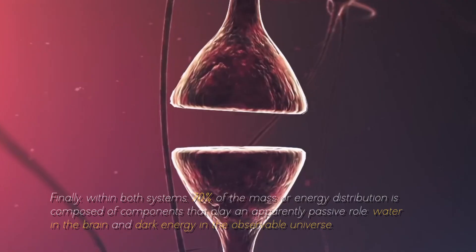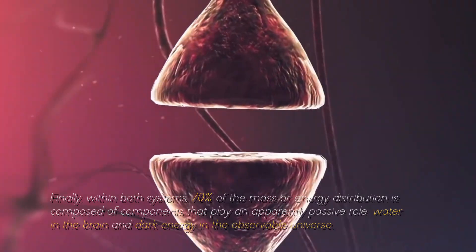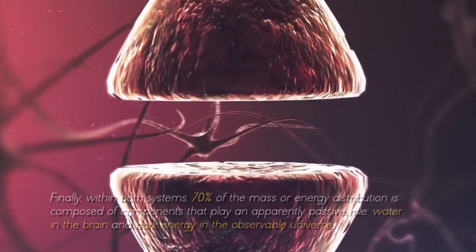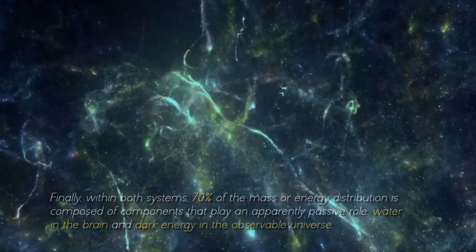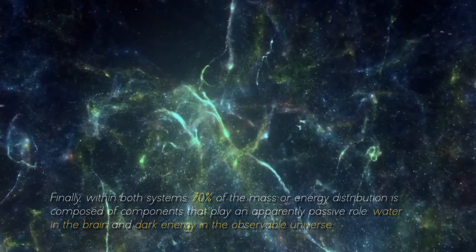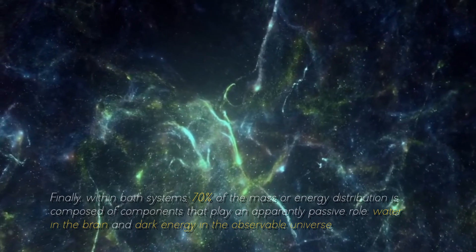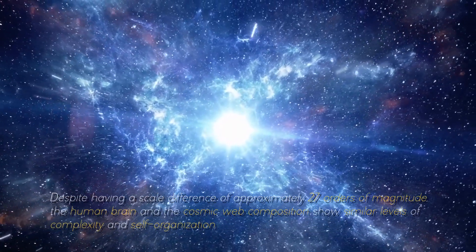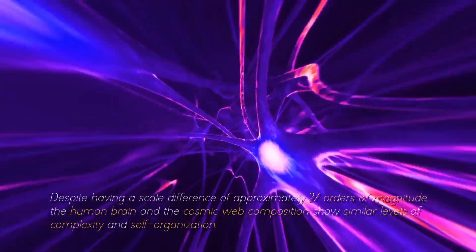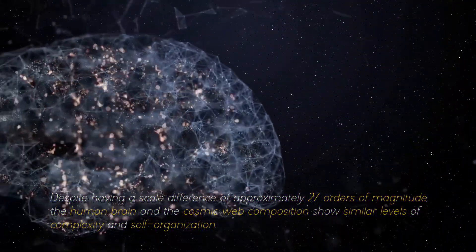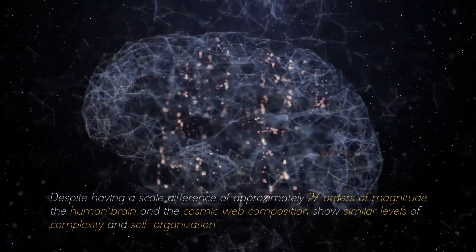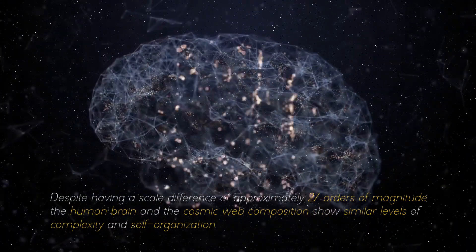Finally, within both systems, 70% of the mass or energy distribution is composed of components that play an apparently passive role: water in the brain and dark energy in the observable universe. Despite having a scale difference of approximately 27 orders of magnitude, the brain and the cosmic web composition show similar levels of complexity and self-organization.